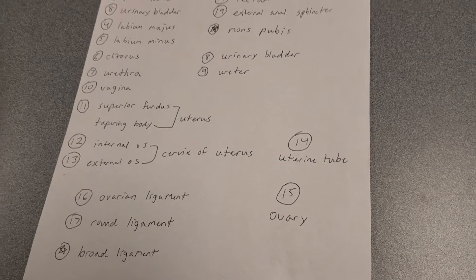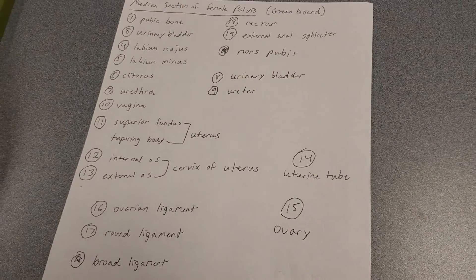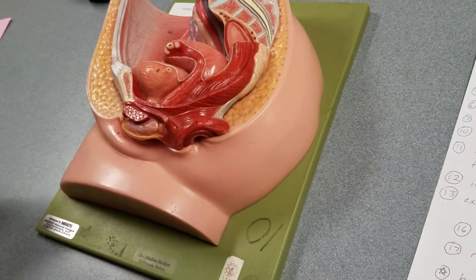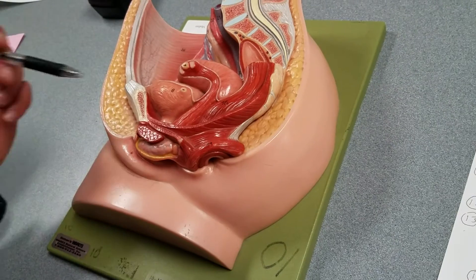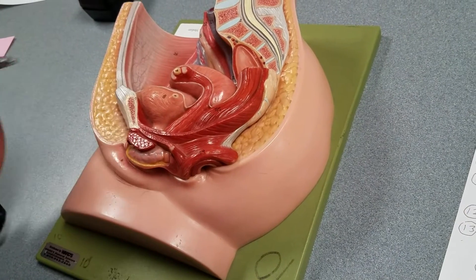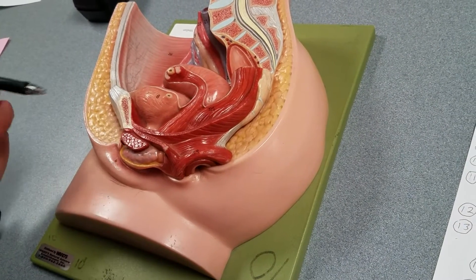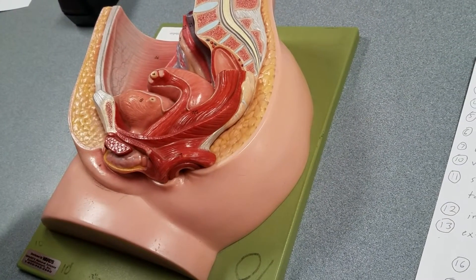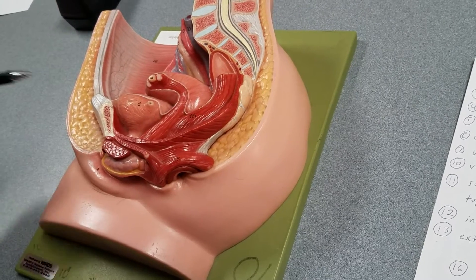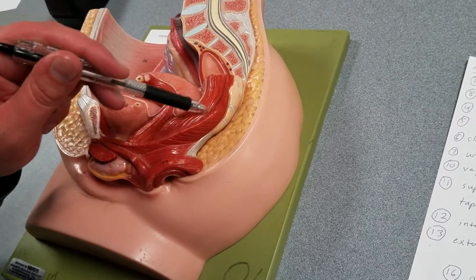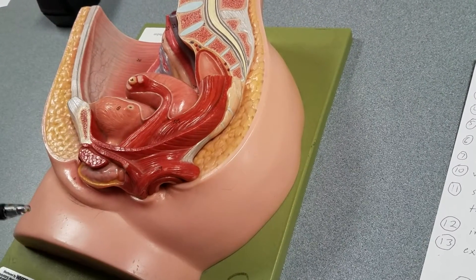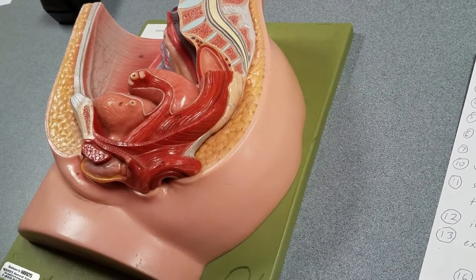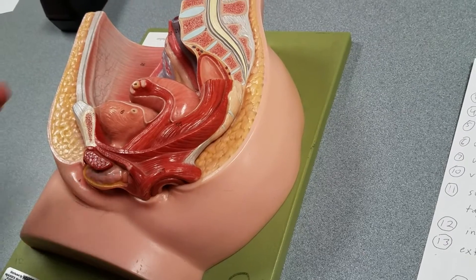The median section of the female pelvis on the green board. Starting off for reference, there's the pubic bone at number one. And number eight, the urinary bladder. Here's the rectum, and the external anal sphincter.